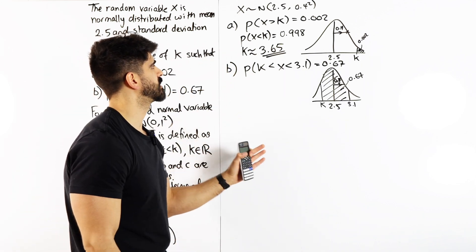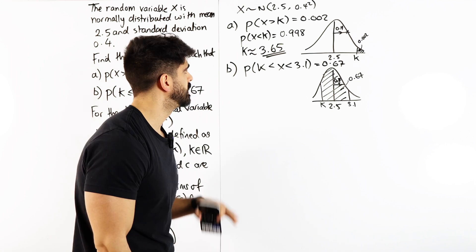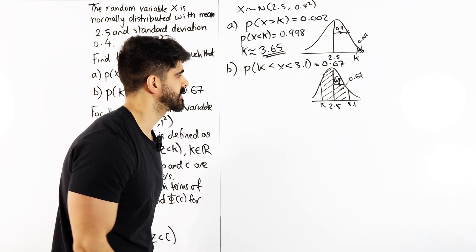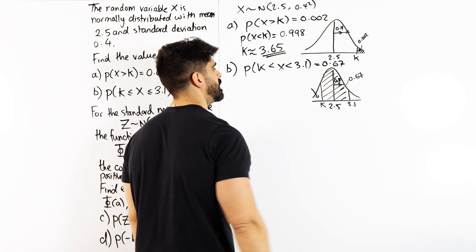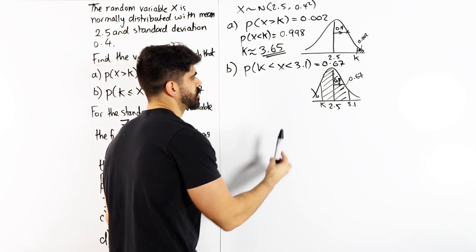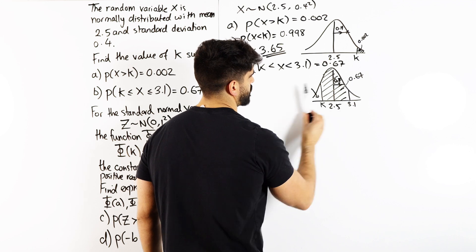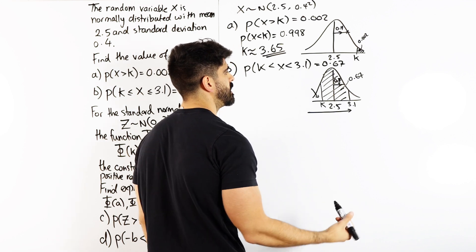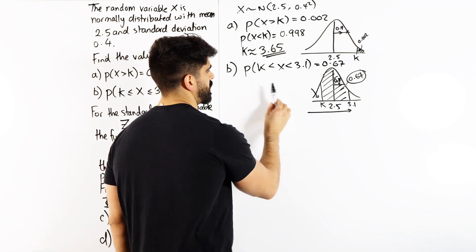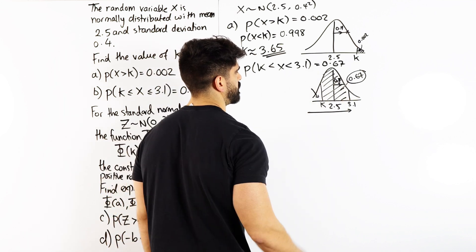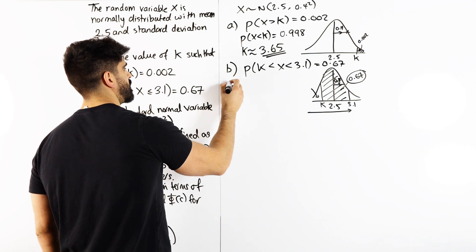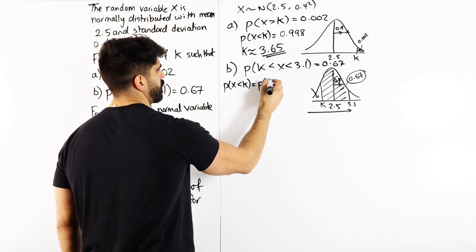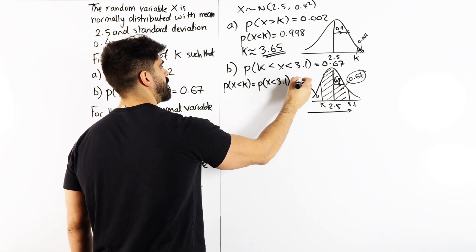Just like in part A, we need a cumulative statement. To find k, I need the probability of being less than or equal to k — that area. We work out the probability up to 3.1 using the cumulative statement, then subtract 0.67. So the probability that x is less than k equals the probability of being less than 3.1, minus 0.67.